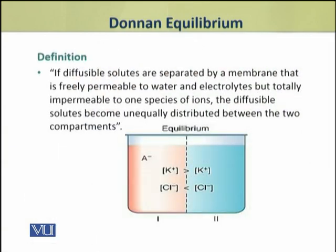It is defined as follows: if diffusible solutes are separated by a membrane that is freely permeable to water and electrolytes but is totally impermeable to one species of ions, the diffusible salts become unequally distributed between the two compartments.